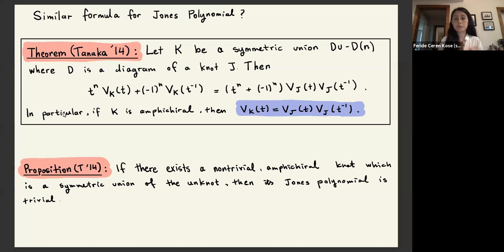And then I guess the answer to the problem of non-trivial knots with trivial Jones polynomial is affirmative. I mean, if there exists such knots, it's very natural to expect such knots among symmetric unions.